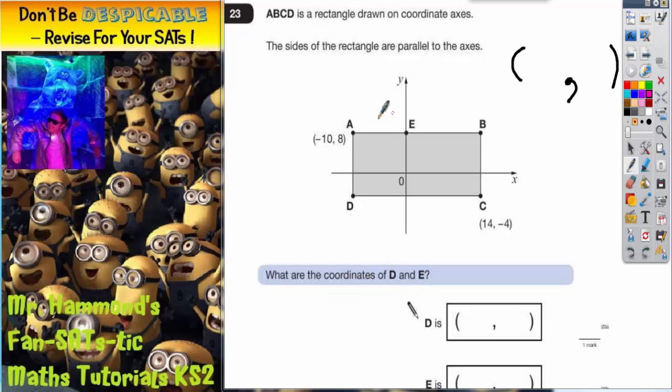So what we've got to do is use the information on the picture already to help us work out what coordinates D and E are. Now at this point it's worth remembering how we actually get our coordinates. The first number in any coordinate before the comma is whether you go left or right. And if you go to the left of 0 you're going into negative numbers, so to the left is negative. So this negative 10 here must be 10 to the left. This 14 here is 14 to the right of 0.